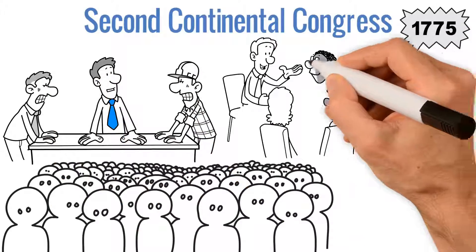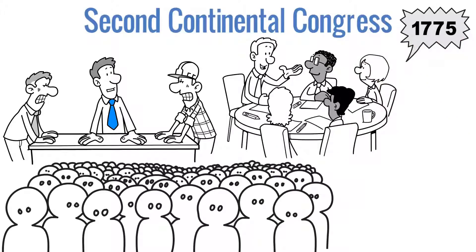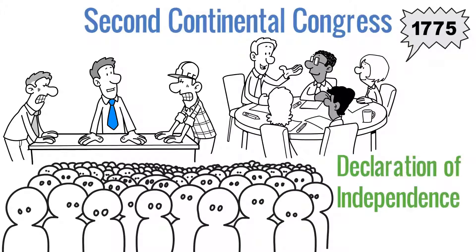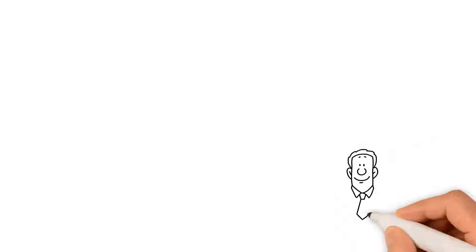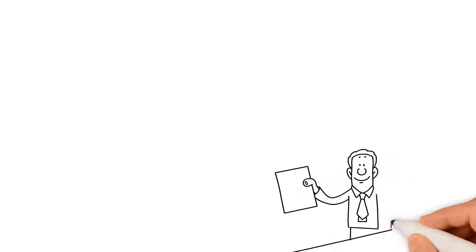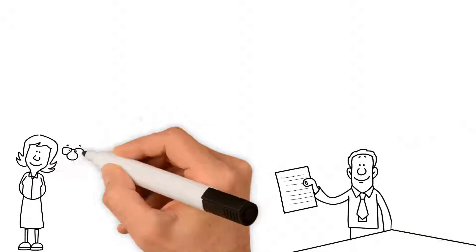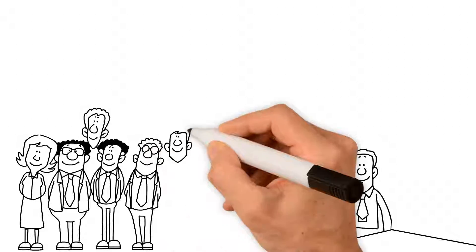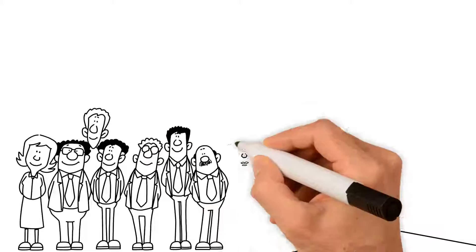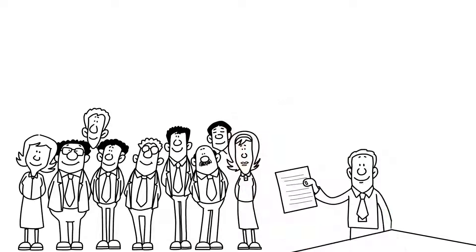This Congress asked Thomas Jefferson and others to write the Declaration of Independence. When Thomas Jefferson finished his draft of the Declaration of Independence, he took it to John Adams, Benjamin Franklin, and the others on the Committee to review.